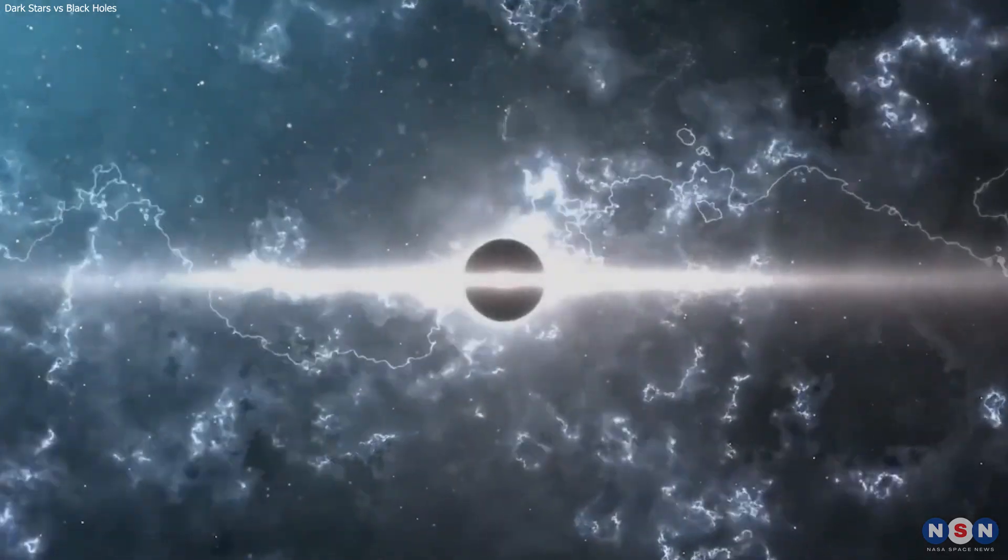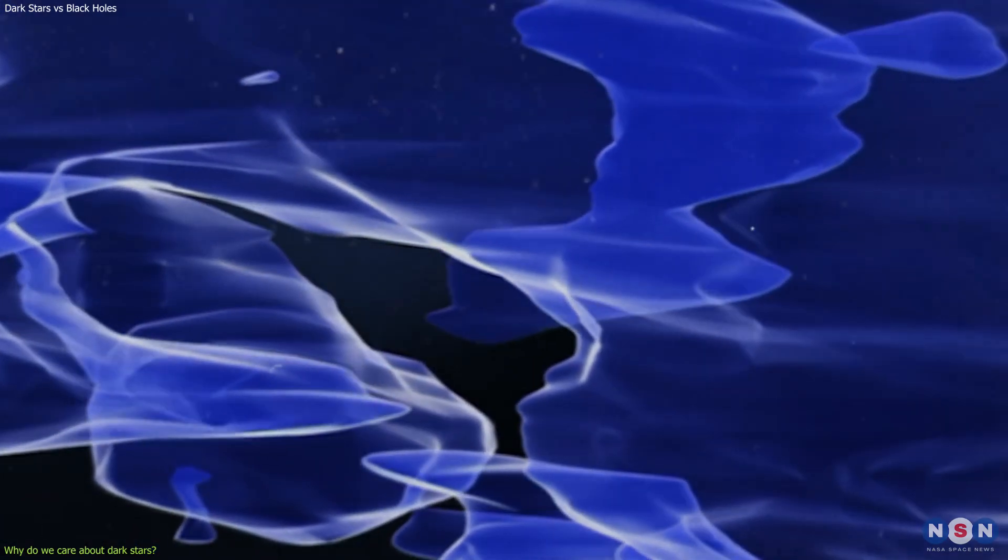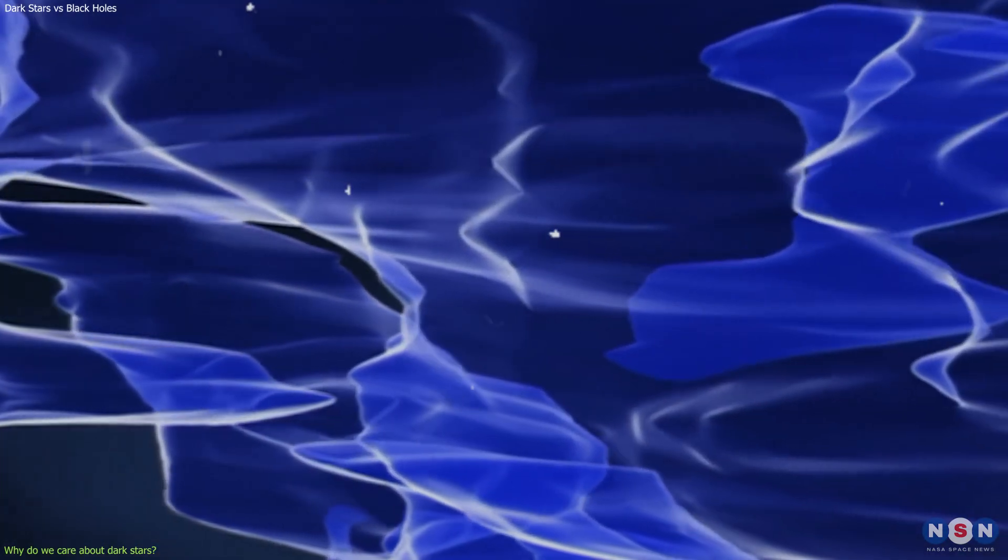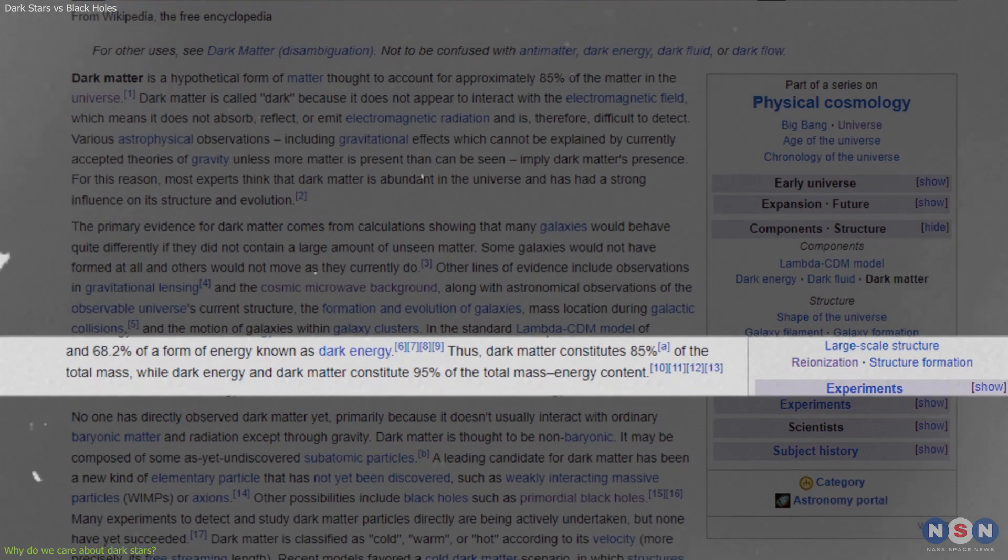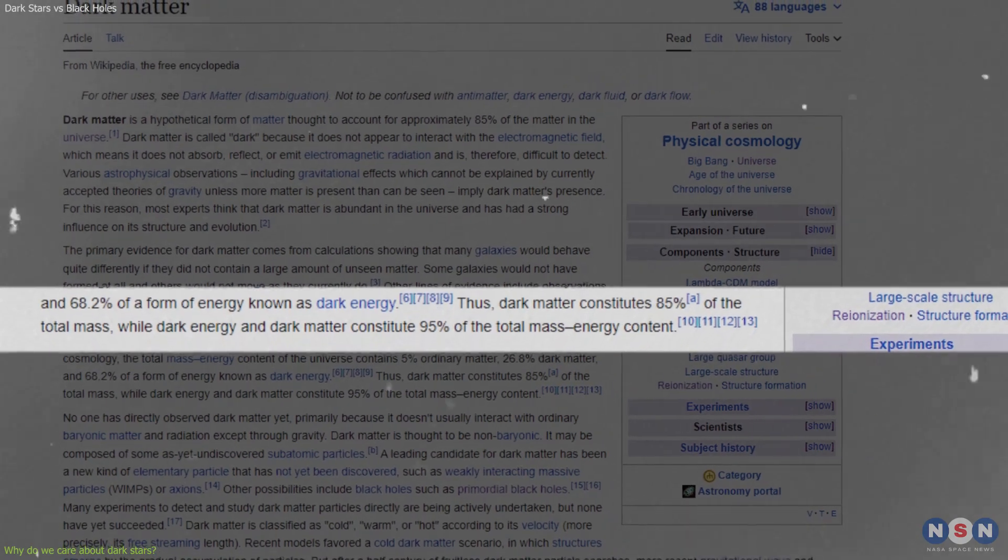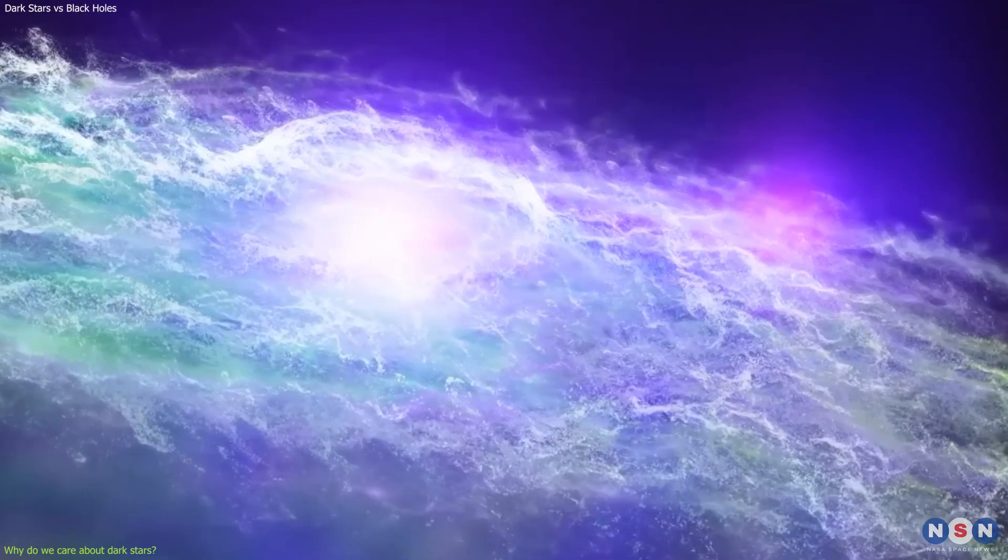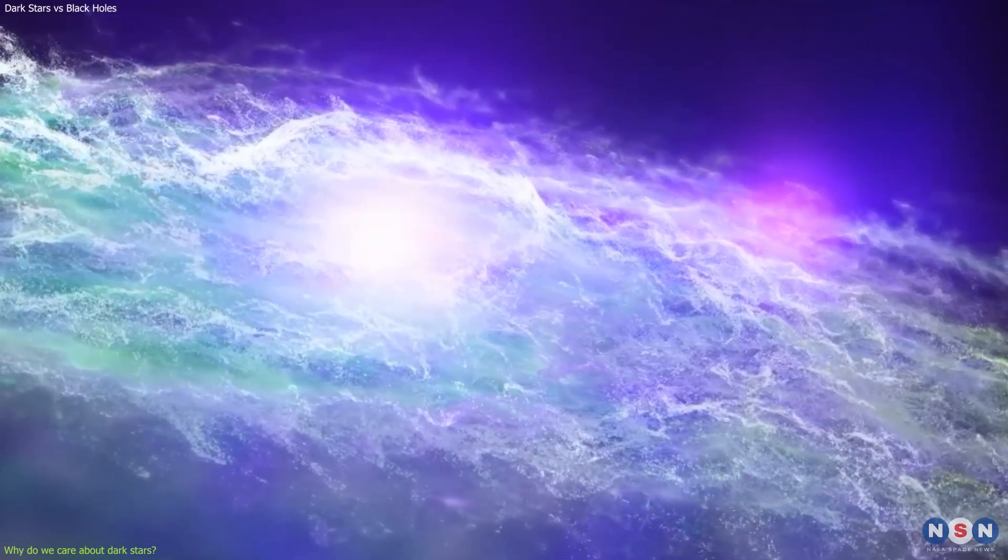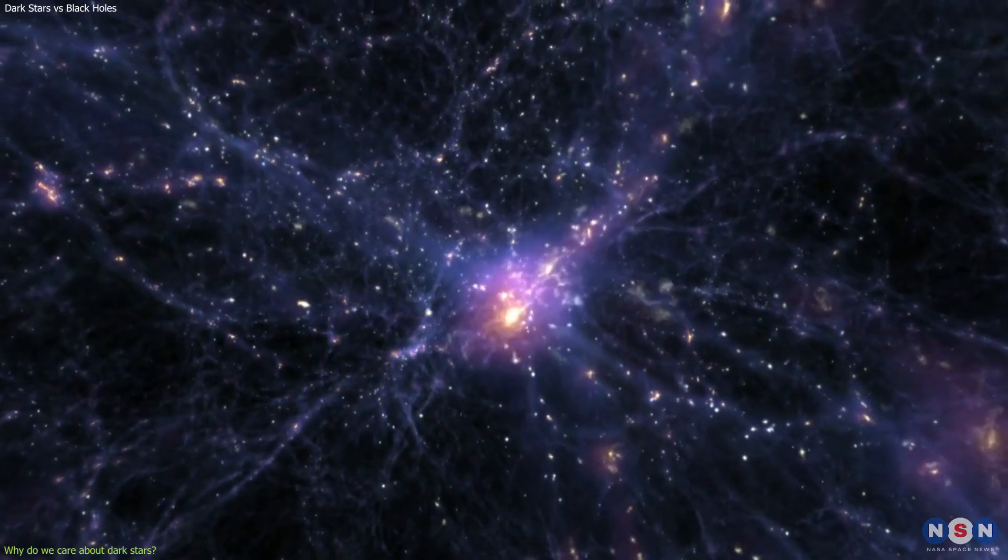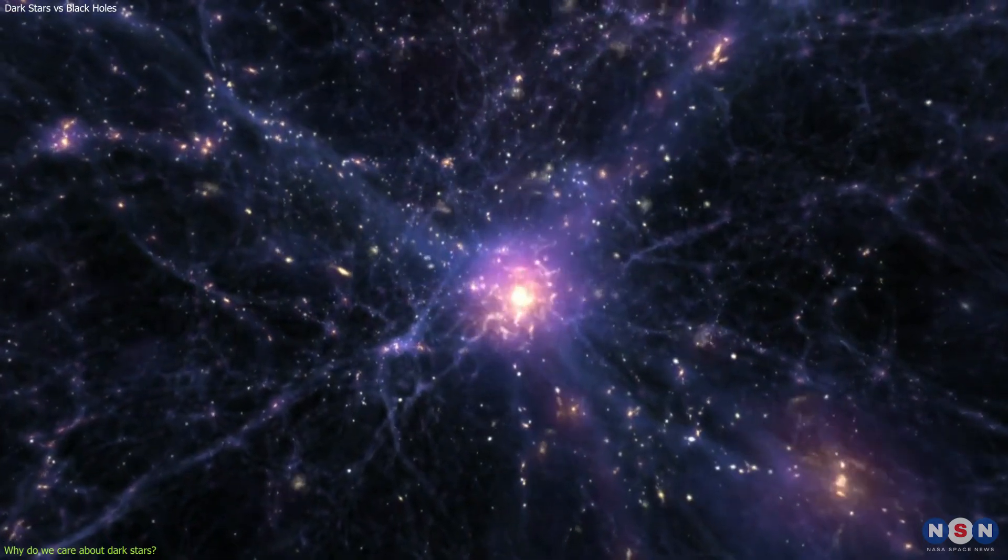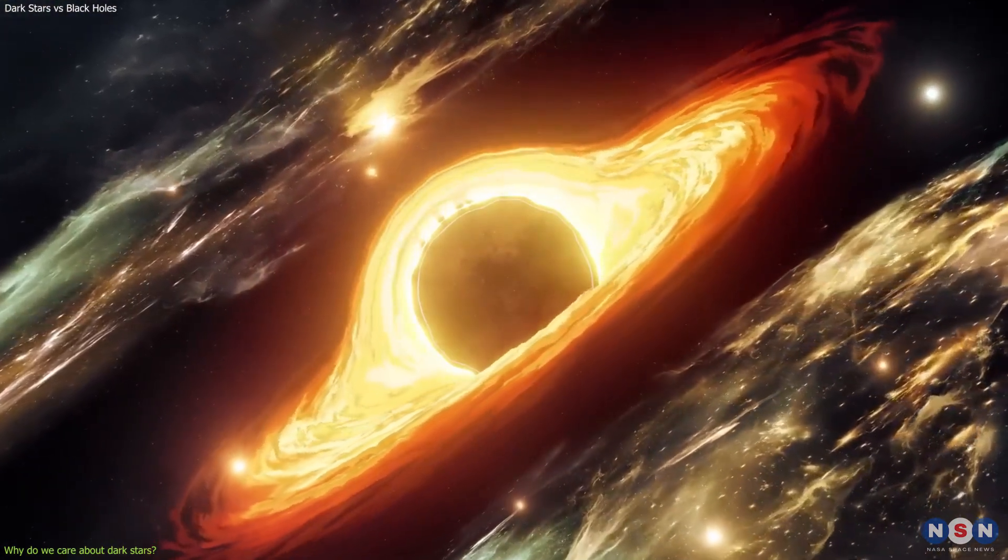Dark stars are one of the possible solutions to the problem of dark matter, which is a mysterious form of matter that does not interact with light or normal matter, but has a gravitational effect on the universe. Dark matter makes up about 85% of the matter in the universe, but we do not know what it is or where it comes from. Some scientists have proposed that dark stars are made of dark matter and that they were the first stars to form in the early universe, before normal stars. If this is true, then dark stars could help us understand the origin and nature of dark matter as well as the evolution of the universe.